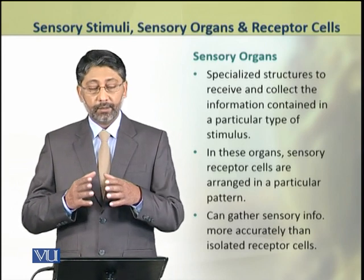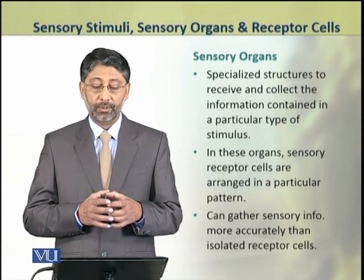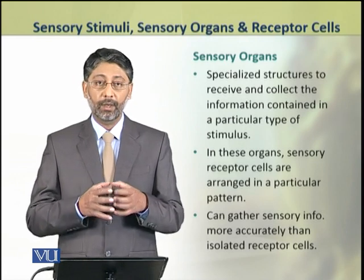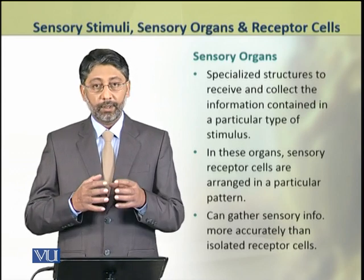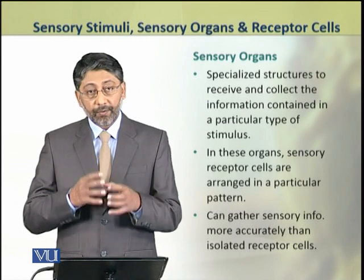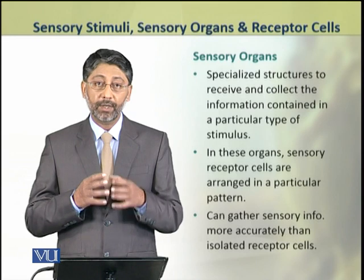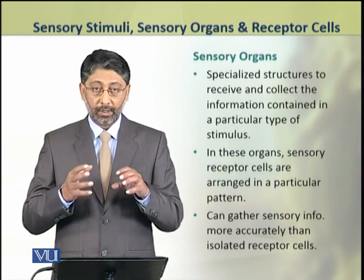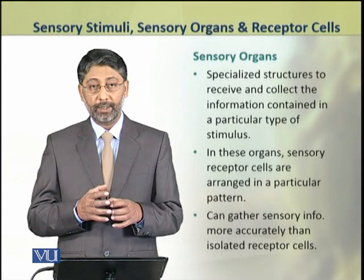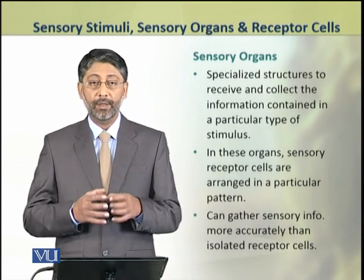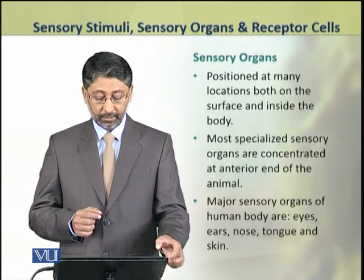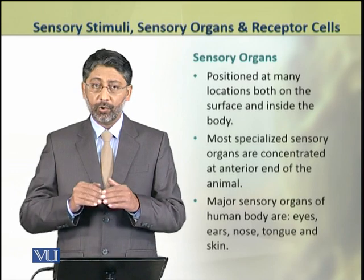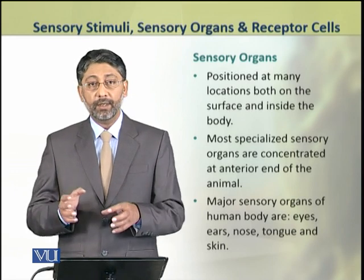The structures which are specialized to collect the information contained in a particular type of stimulus are called sensory organs. In sensory organs, sensory receptor cells are arranged in a particular way. These organs can collect or gather sensory information more accurately than scattered or individual receptor cells. Sensory organs are located at different parts of the body, both on the surface and in the deeper parts.